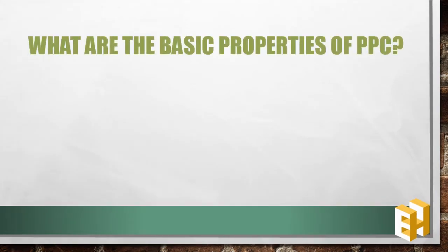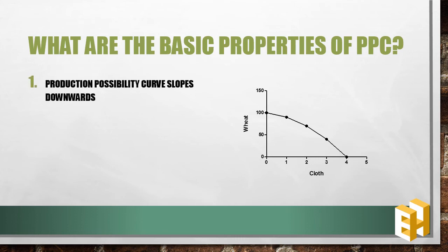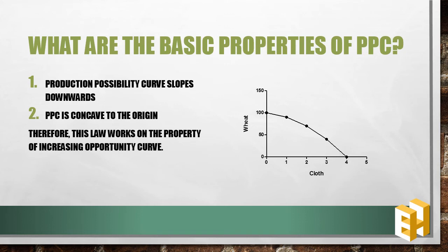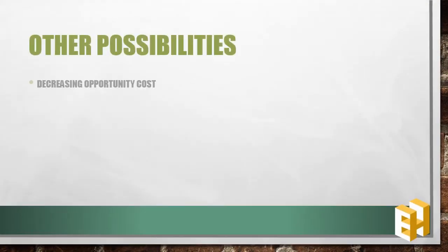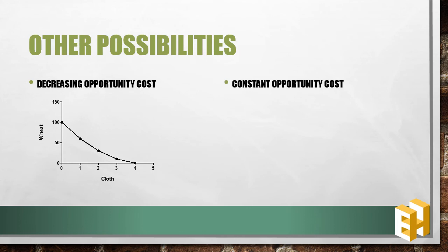Overall, the properties of the PPC curve are: it is a downward sloping curve and it is concave to the origin. The concave nature of PPC implies that the opportunity cost is increasing — that is, to produce each successive unit of cloth, you are giving up more and more units of wheat which could be produced. However, we also have a case of decreasing opportunity cost, in which PPC is convex to the origin, and a constant opportunity cost curve, where PPC is a downward sloping linear line.